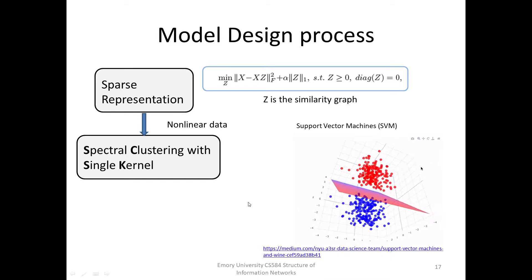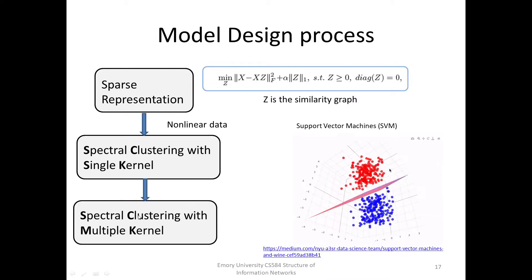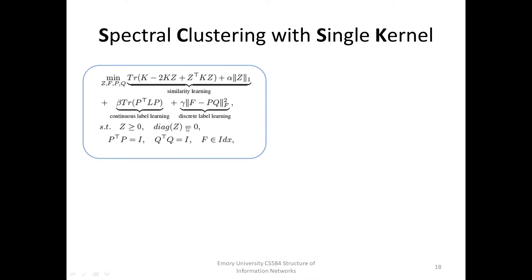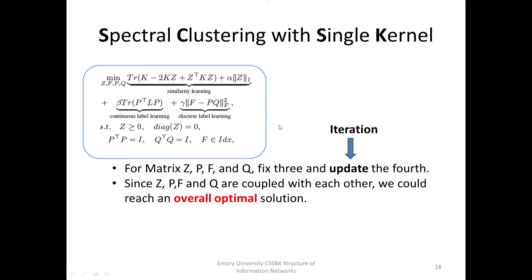To solve the kernel-dependent issue, a multiple-kernel approach is later proposed. The paper changes the sparse representation equation into a new model equation. To efficiently and effectively solve the equation, an alternative method is used to update the variable matrix. Since matrix C, P, F, and Q are coupled with each other, we could reach an overall optimal solution.